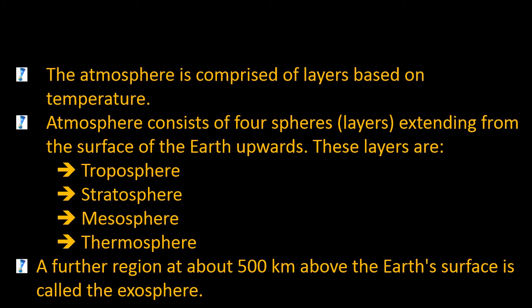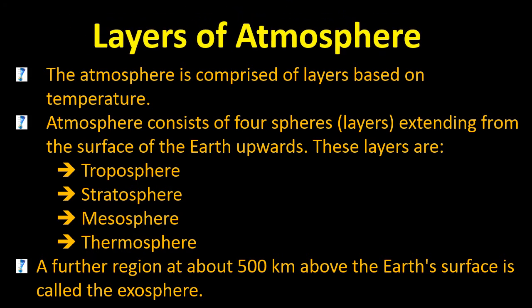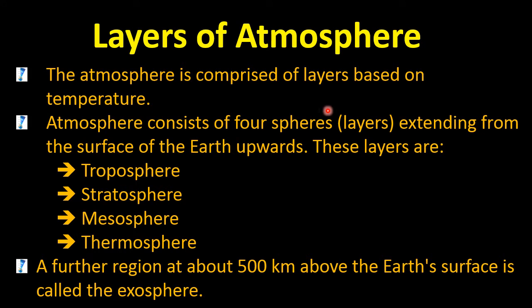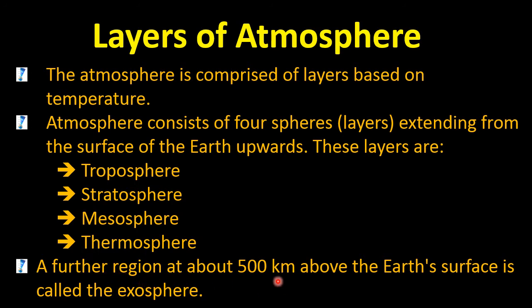Now it's time to make notes so we can easily memorize them during the exam. The atmosphere is comprised of layers based upon temperature. Atmosphere consists of four spheres extending from the surface of the Earth upwards. These layers are troposphere, stratosphere, mesosphere, and thermosphere. Exosphere was discussed earlier but is mostly not included in books. A further region at about 500 km above the Earth's surface is called exosphere.